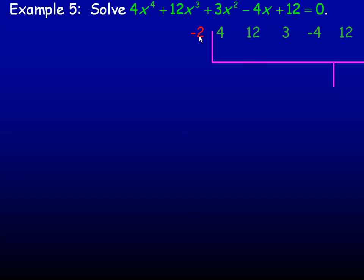And a number that actually works is negative 2. Negative 2 certainly divides into 12. Once again, if you had a graphing calculator, you could graph this and look for x-intercepts. Those are numbers that will work. Bringing the 4 down, 4 times negative 2 is negative 8. And 12 and negative 8 add to positive 4. 4 times negative 2 is negative 8. Again, 3 and negative 8 add to negative 5. Negative 5 times negative 2 is 10. And negative 4 and 10 add to 6. And 6 times negative 2 is negative 12. Adding to positive 12 gives you 0.